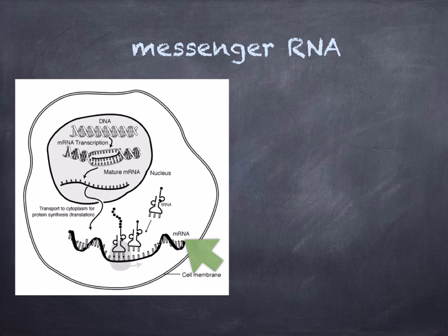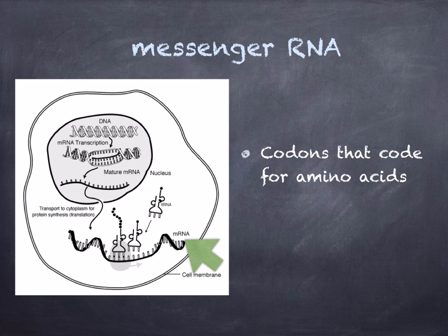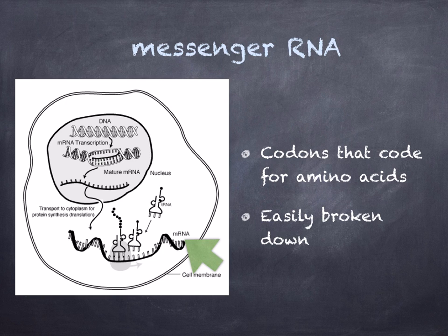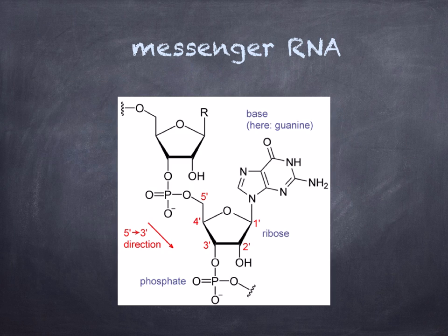mRNA is made in the nucleus and then travels to the cytoplasm, where tRNA is going to bind to it. Its structure is suited to its function because it possesses the correct sequence of many triplets of nitrogenous bases, which we call codons, and these codons code for amino acids. Messenger RNA is also easily broken down, so it exists only for as long as it's needed to manufacture a given protein. mRNA is made in the 5' to 3' direction, meaning new nucleotides are added to the 3' end of the chain.